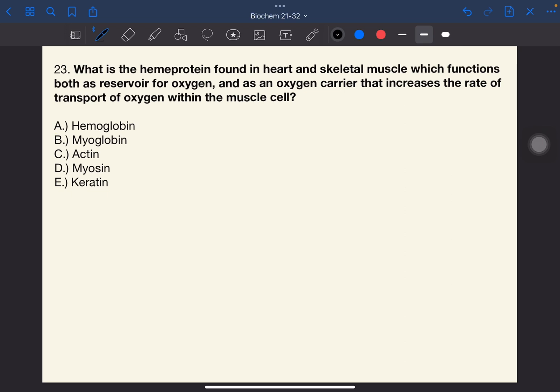Number 23. What is the heme protein found in heart and skeletal muscle which functions both as reservoir for oxygen and as an oxygen carrier that increases the rate of transport of oxygen within the muscle cell? The answer to this one is B, myoglobin.